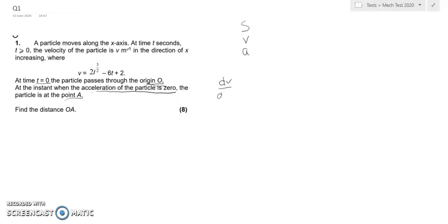So dV/dt, if I differentiate that, I'm going to get 3t to the 1/2 minus 6.